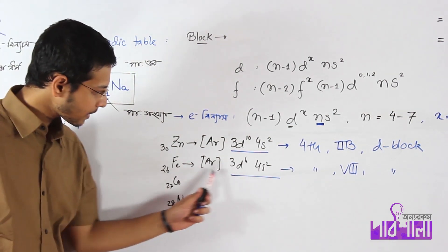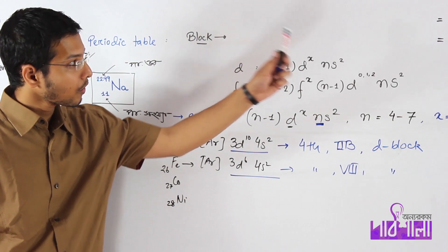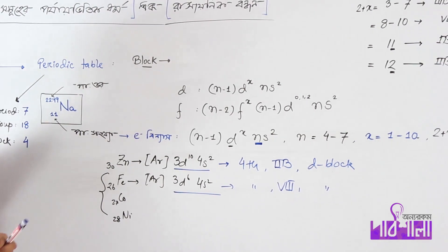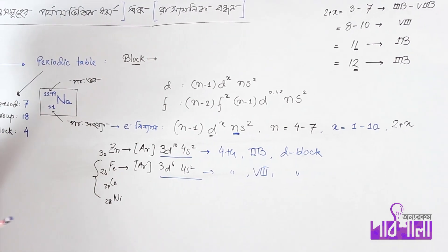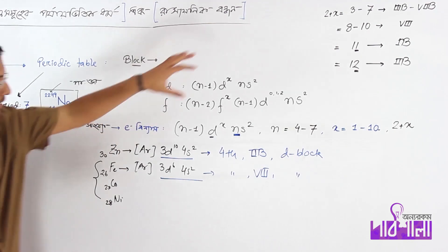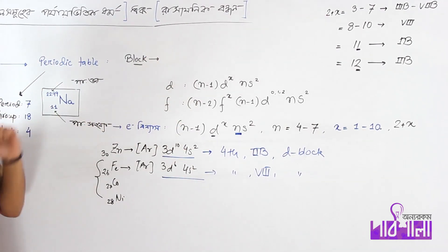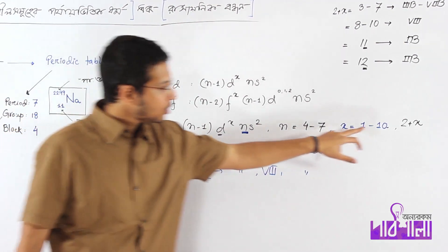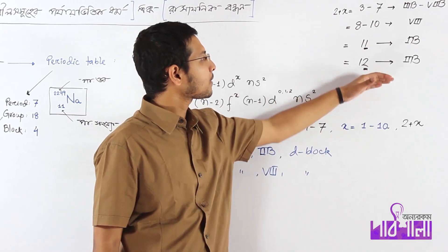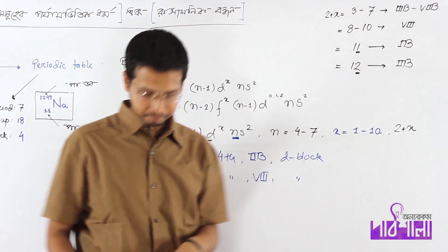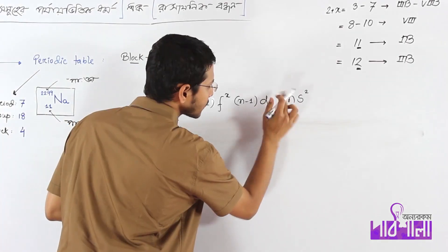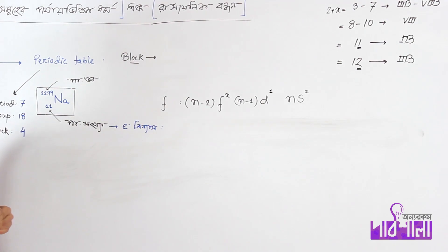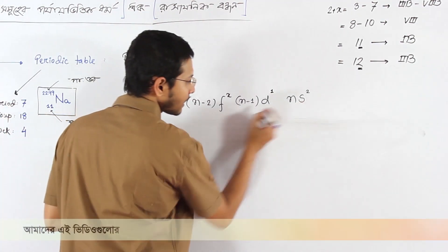In this group, the properties are similar — the current is magnetic and the properties are comparable. The range goes to the 7th value, with the formula 2 plus x remaining the same. Finally, this brings us to the last block: the F-block.